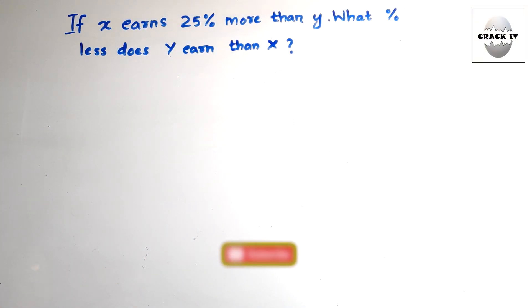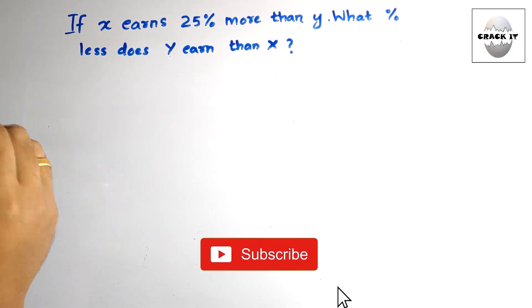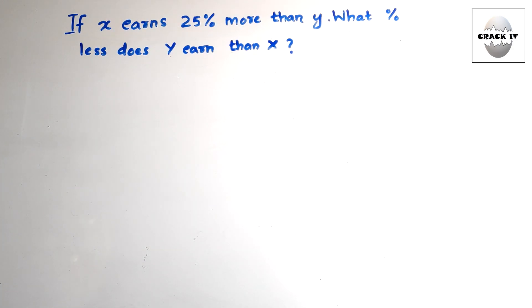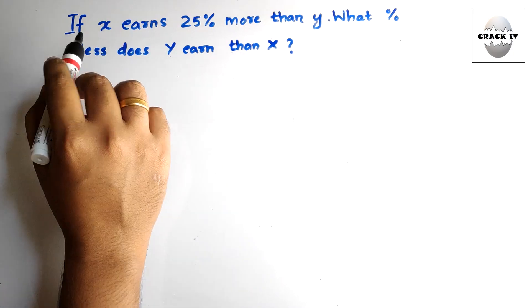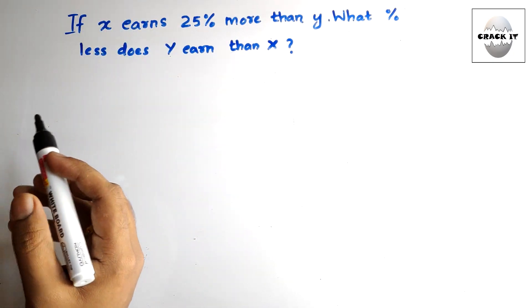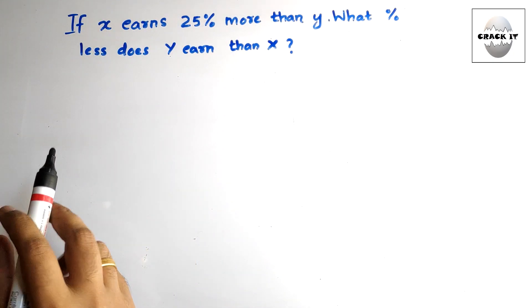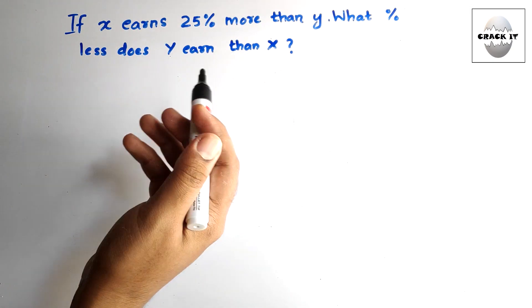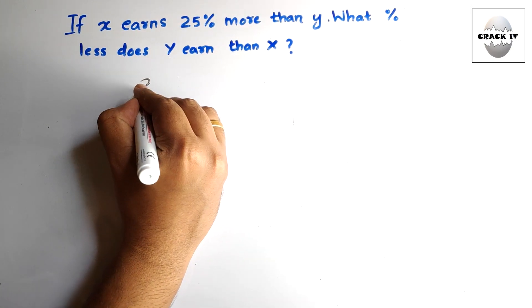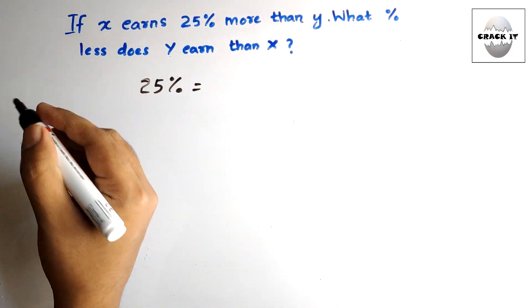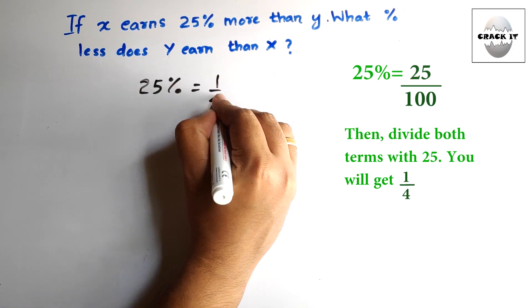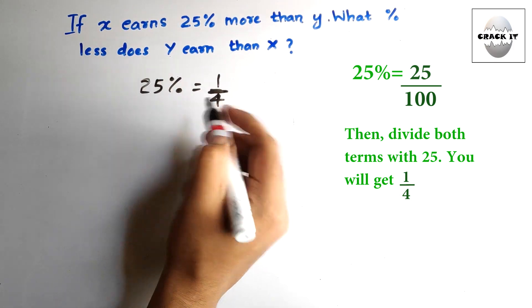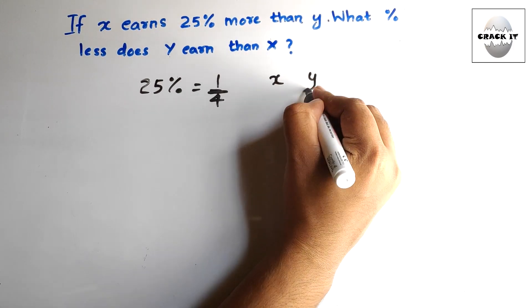Today I will be discussing two questions regarding percentage — how to do percentage in the easiest possible way. The first question: if X earns 25% more than Y, what percentage less does Y earn than X? Whatever percentage is given, we can write it as is: 25%. So what is 25%? That will be 1/4, since 25/100 = 1/4.